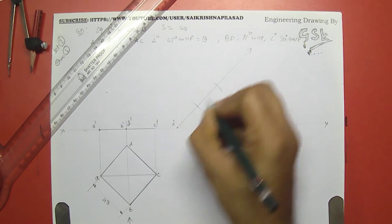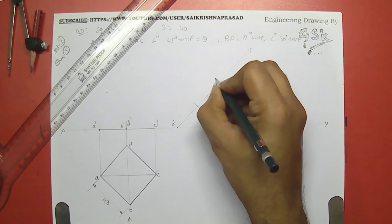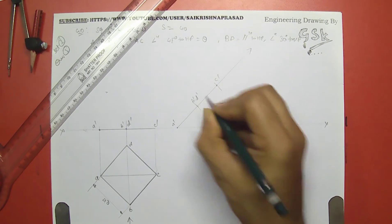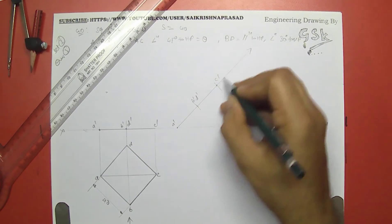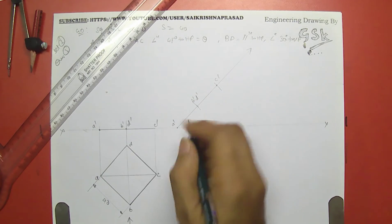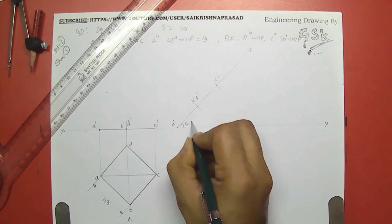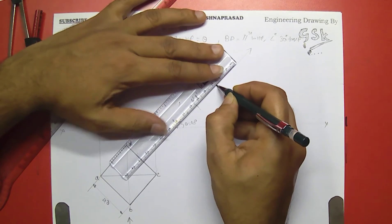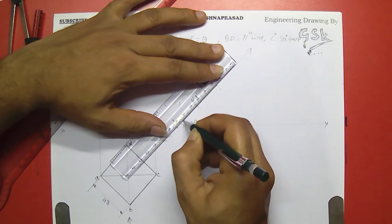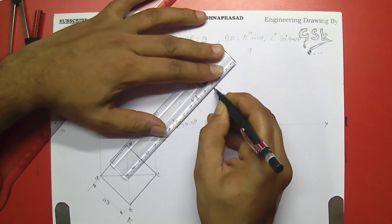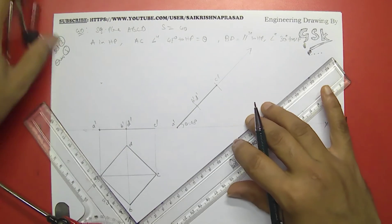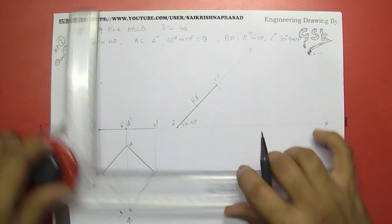This point is A dash, this is C dash, this is B dash, D dash — meaning diagonal AC is 45 degrees (theta = 45 degrees) to the HP. Now project this down to get the top view.